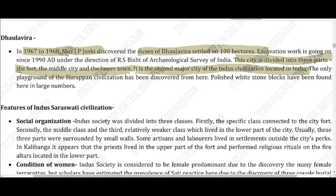The first major Harappan site in India is Rakhigarhi, and the second is Dholavira. Overall, the largest city in the Harappan civilization is Mohenjo-daro. The only playground of Harappan civilization discovered so far has been found at Dholavira — this is a very important fact for exams.